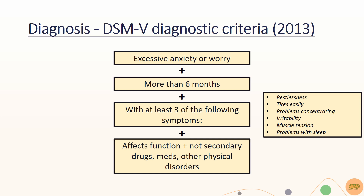These criteria are quite technical and may not be as relevant for your exams. However, for those who are interested, the DSM-5 criteria include excessive anxiety or worry for more than 6 months with at least 3 of the listed symptoms, and it negatively affects function and activities of daily living, and is not secondary to drugs, medications or other physical disorders.